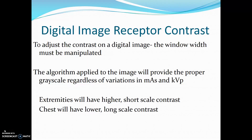To adjust the contrast on a digital image, the window width must be manipulated. The algorithm applied to the image will provide the proper grayscale regardless of variations in mAs and KVP. Extremities will have higher short scale contrast and chest exams will have longer low scale contrast.